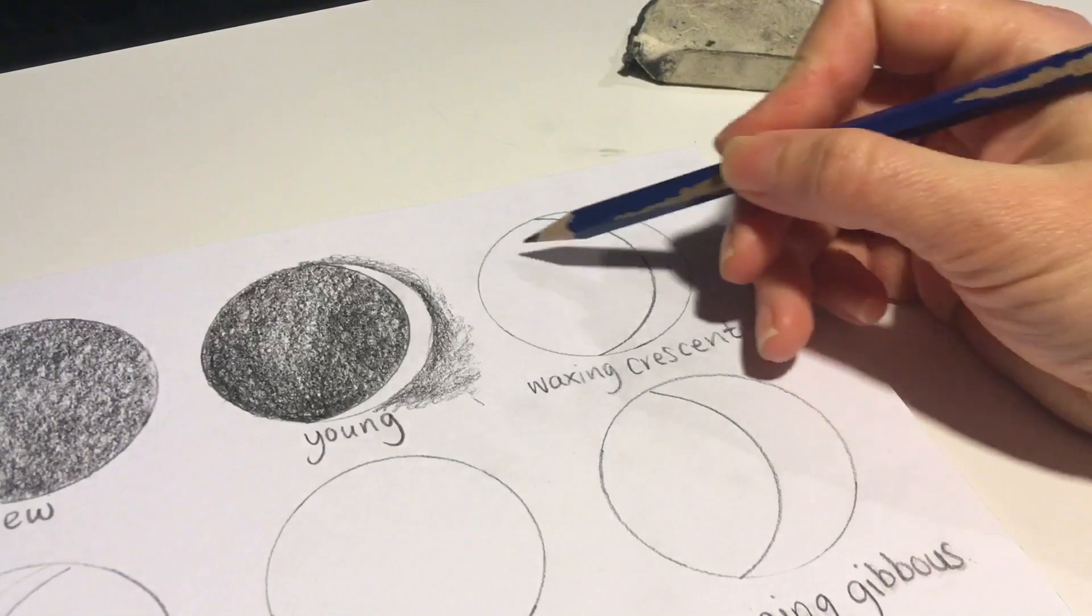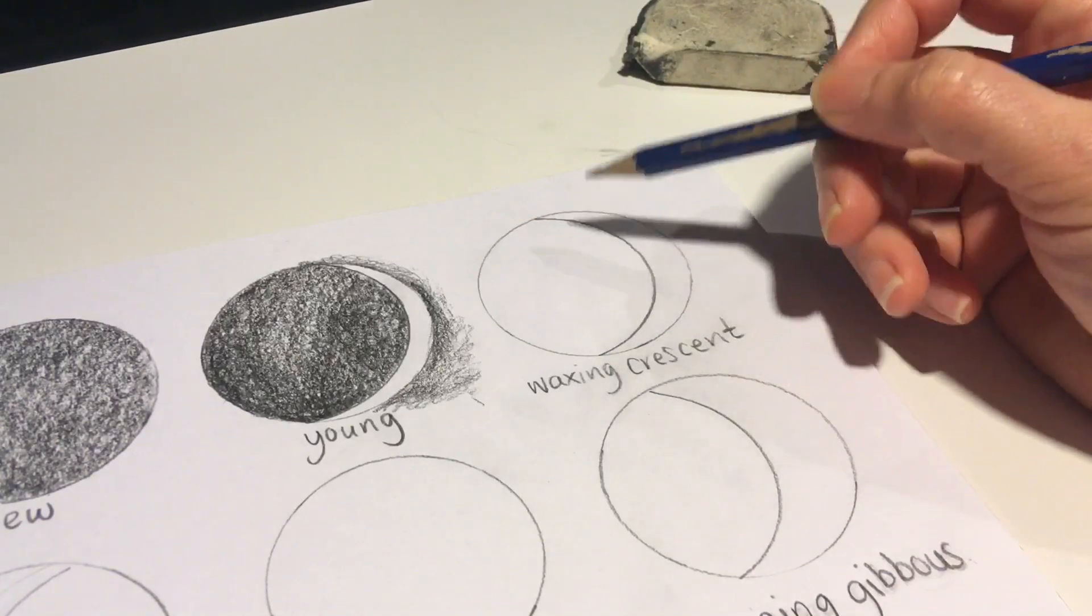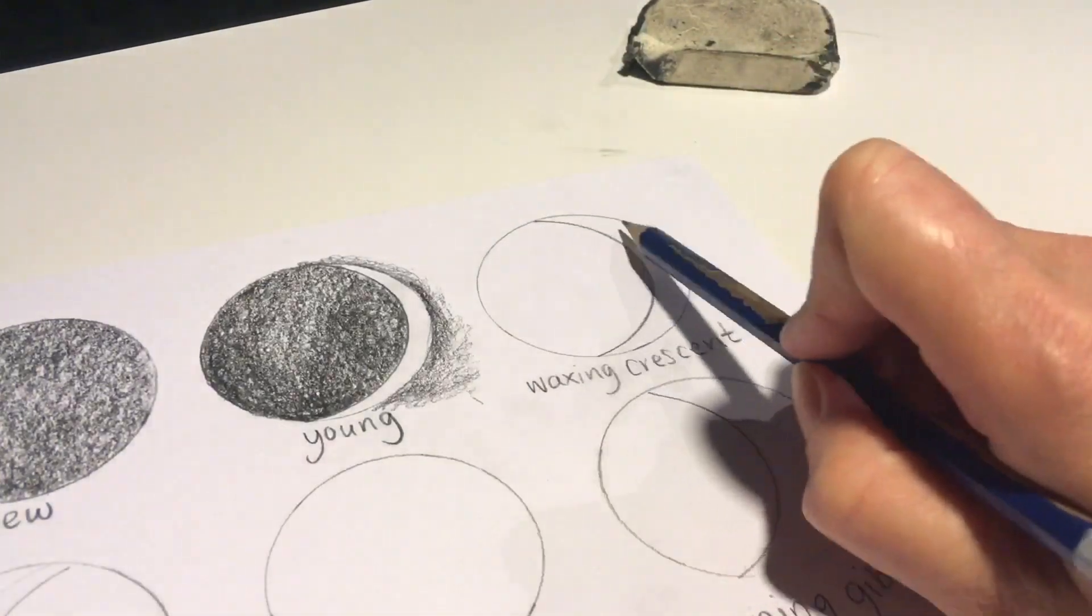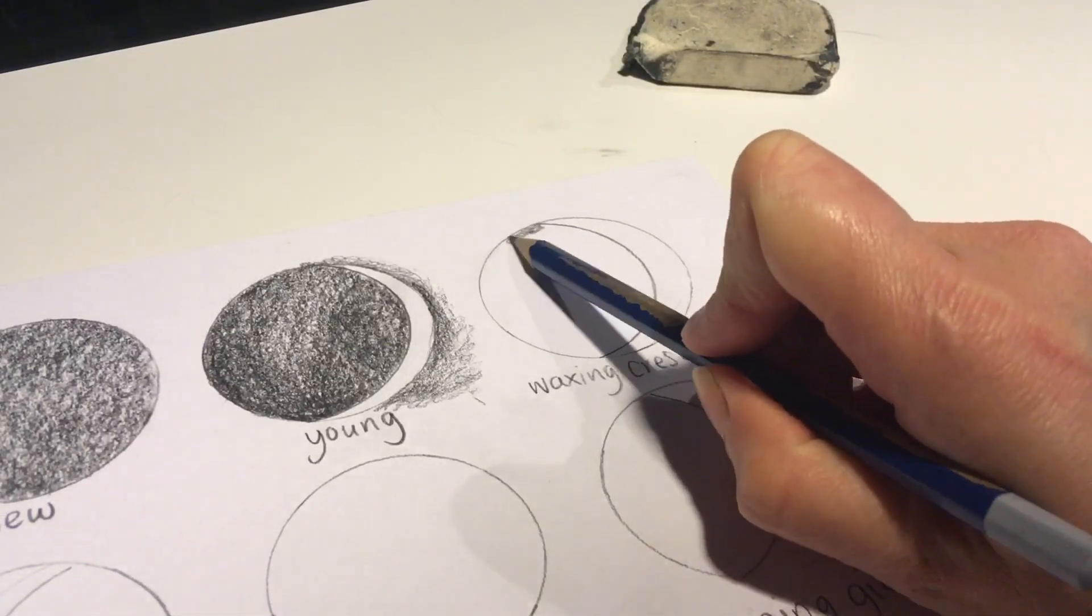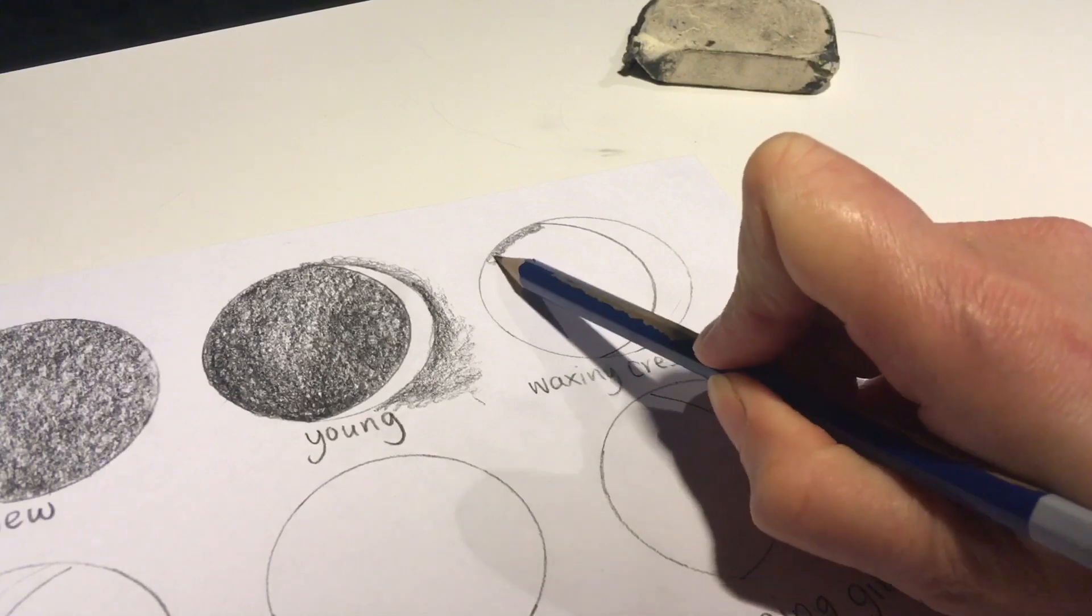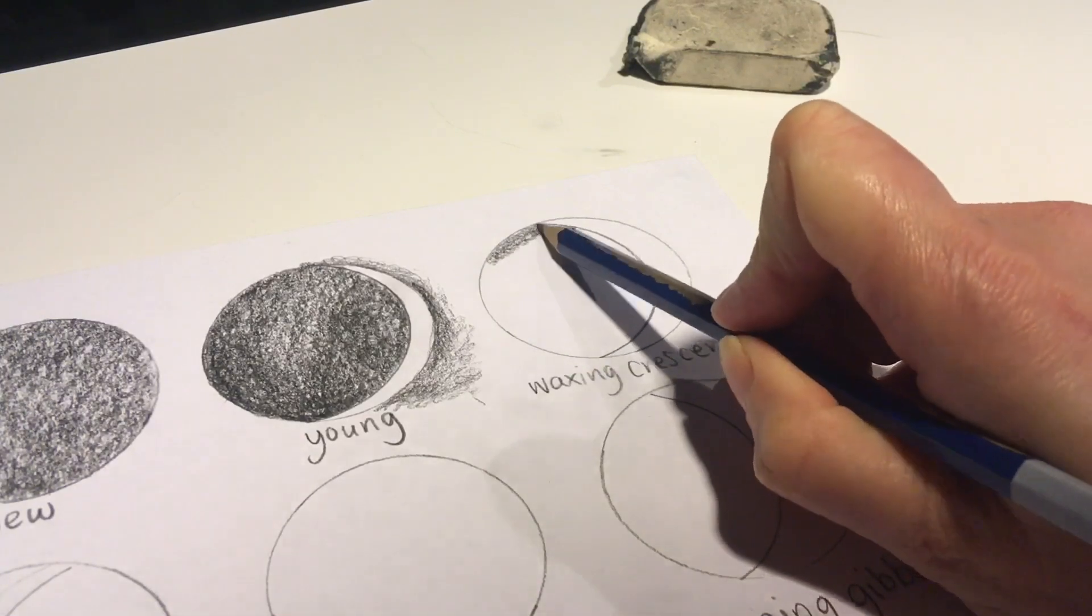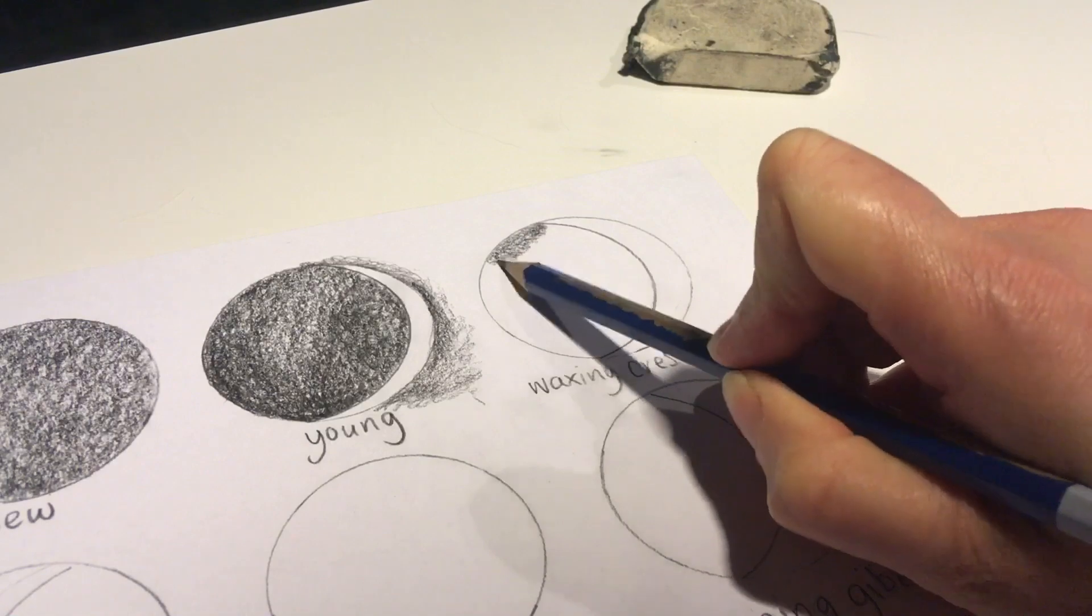For the waxing crescent, we'll continue to shade this area here, so the light area is getting larger and the darker area is getting smaller. Continuing to use our little circles overlapping to build up the shade.